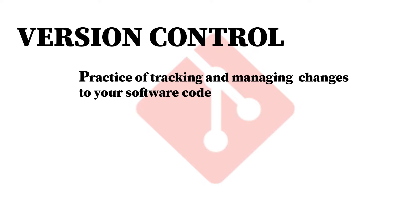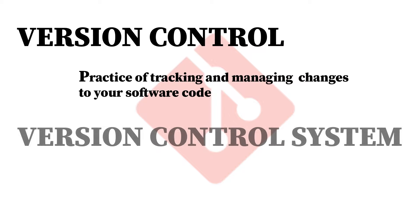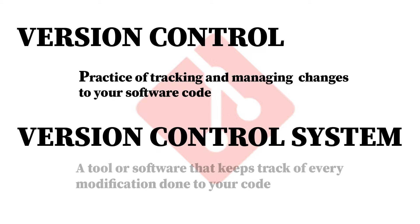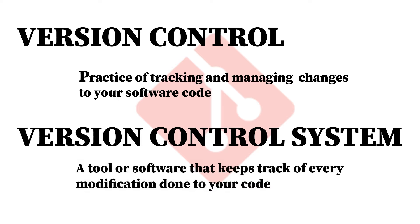Welcome back. Today we're going to cover version control using Git. Version control, also known as source control, is basically the practice of tracking and managing changes to your software code. A version control system is basically a tool or software that keeps track of every modification done to your code and stores it in a special kind of database.